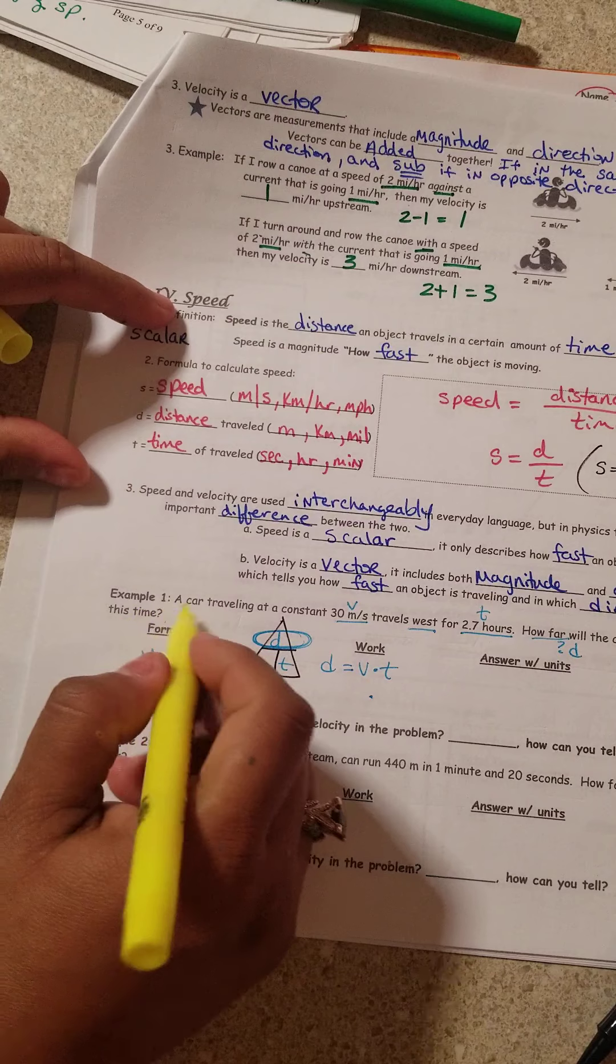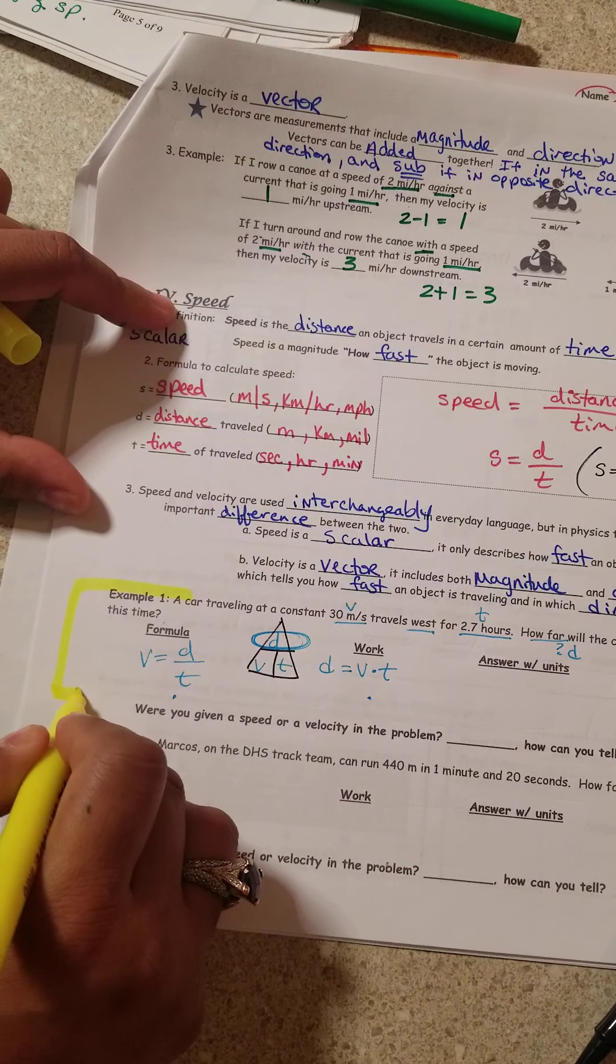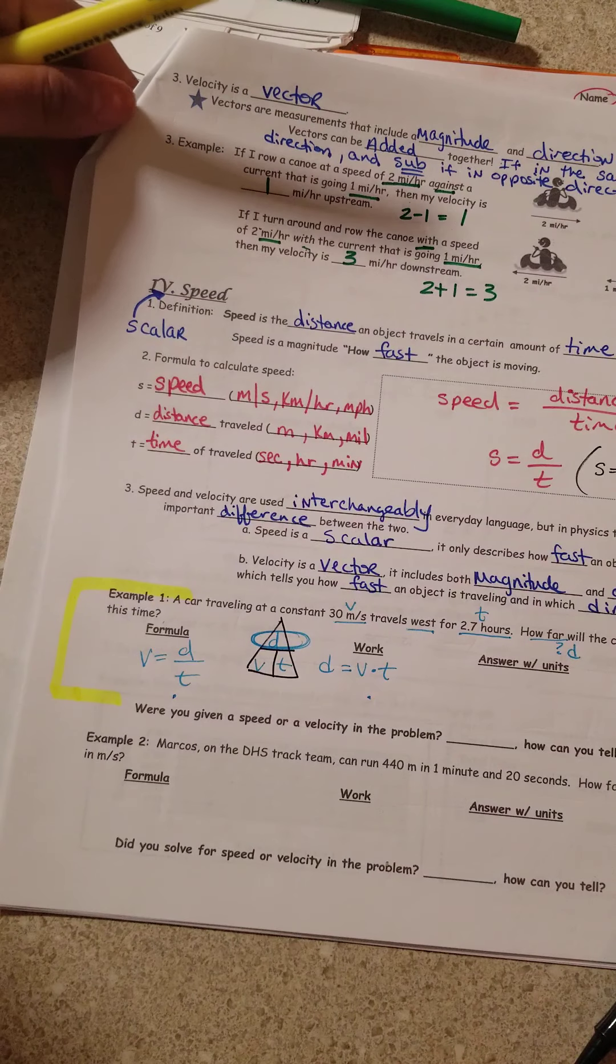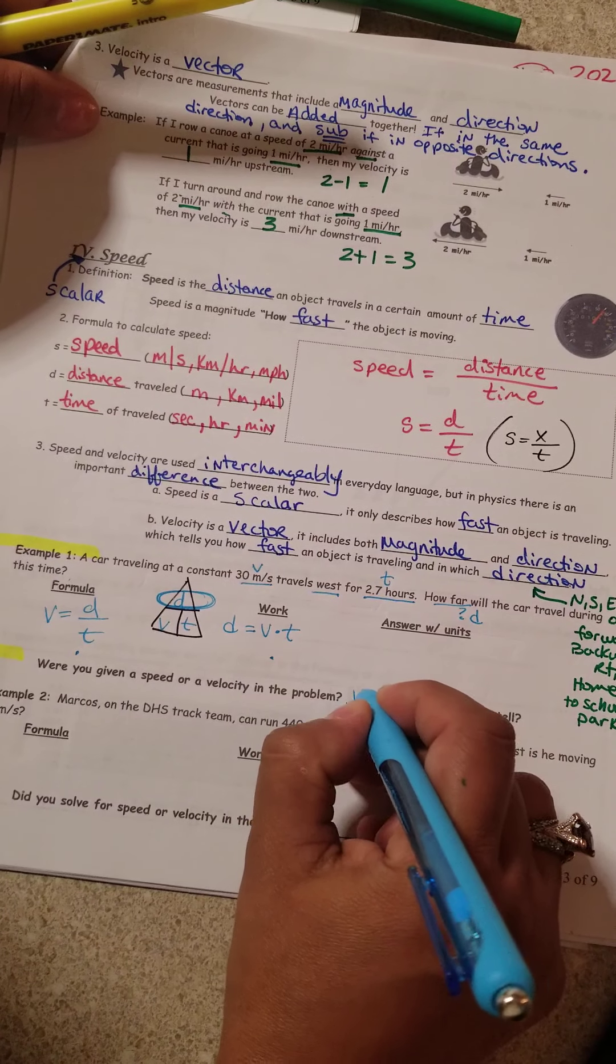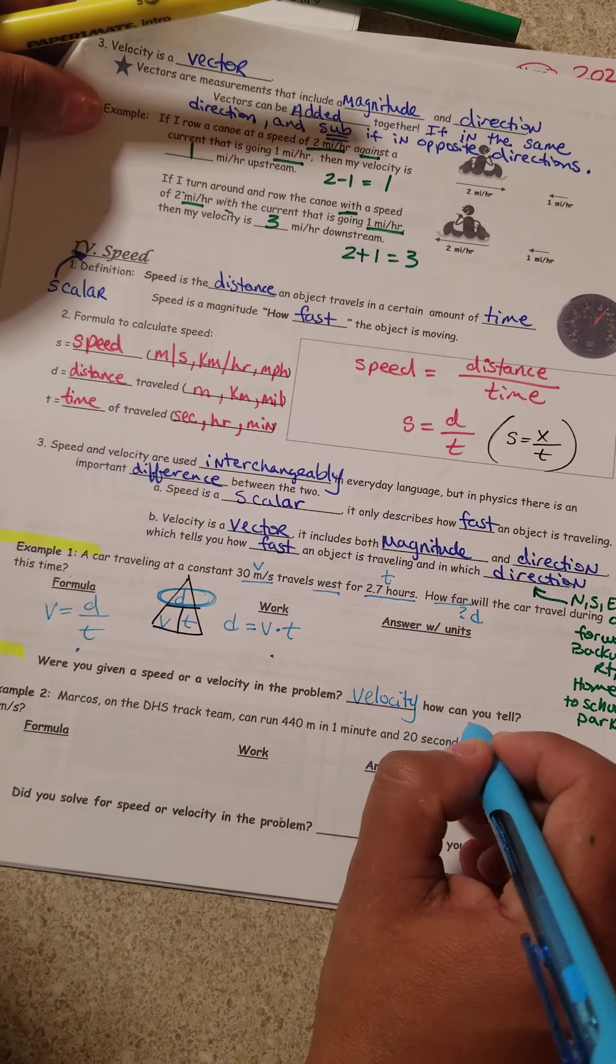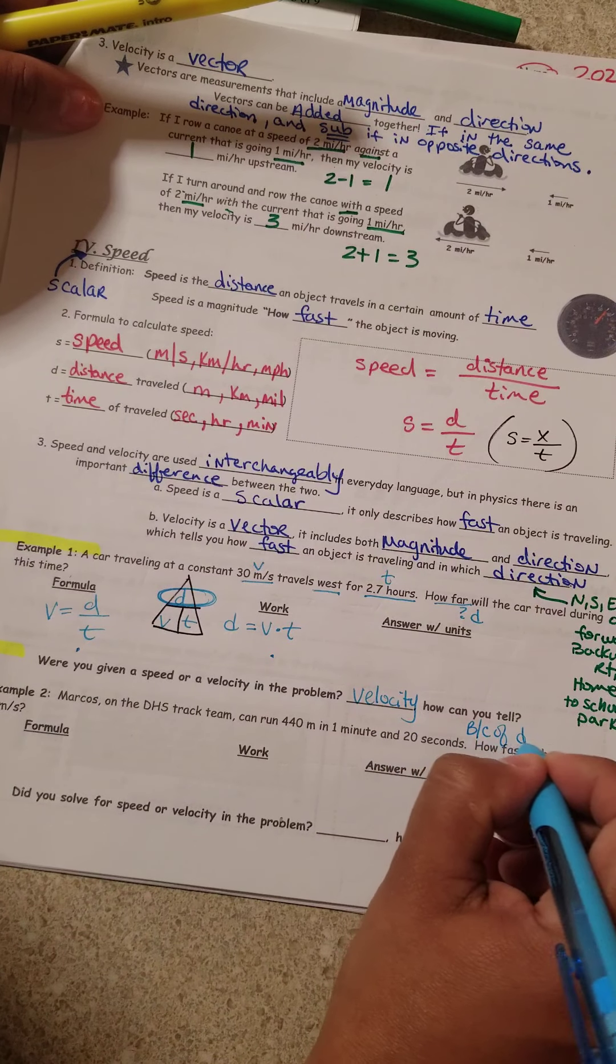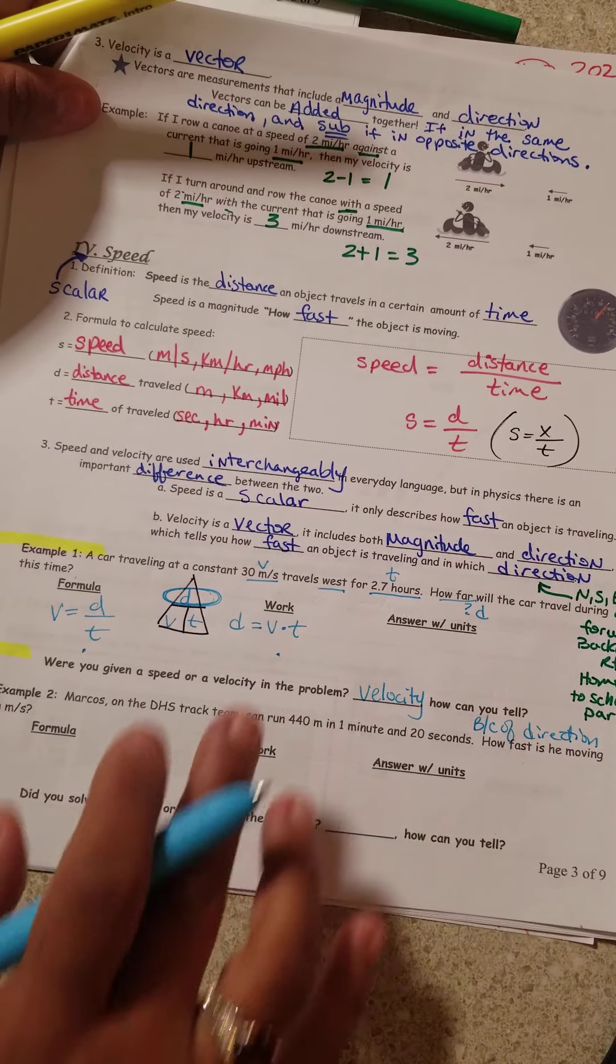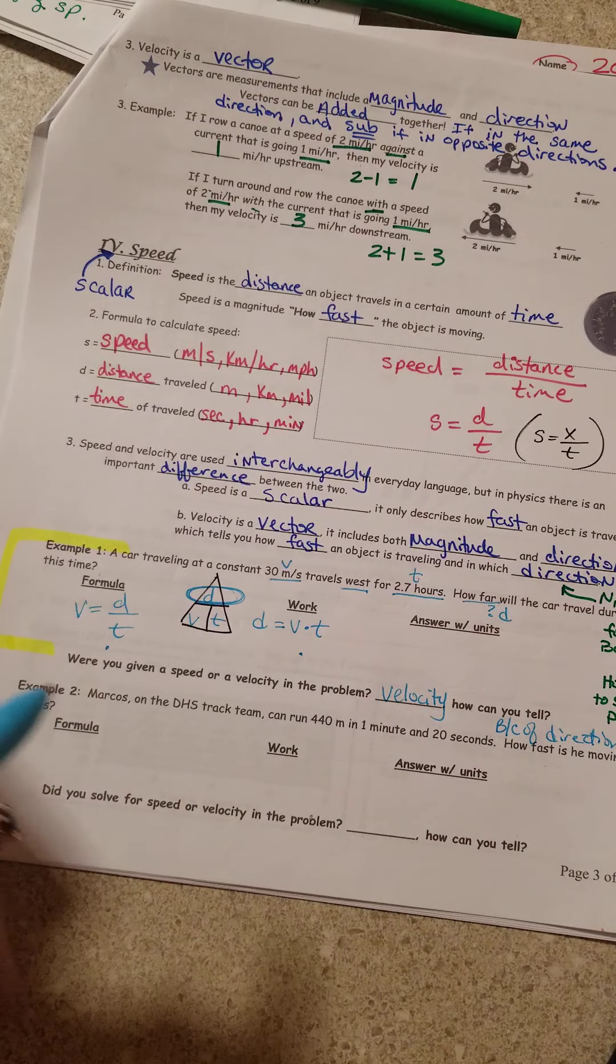We'll come back to this problem when we see each other again. Were you given a speed or a velocity problem? Velocity. How do I know? Because of direction. Please solve this problem, so that way we can talk about it later.